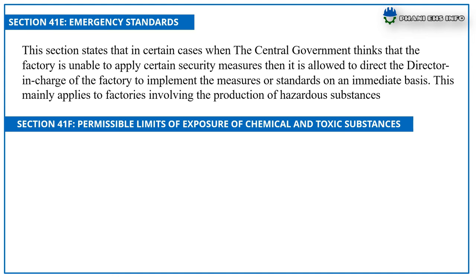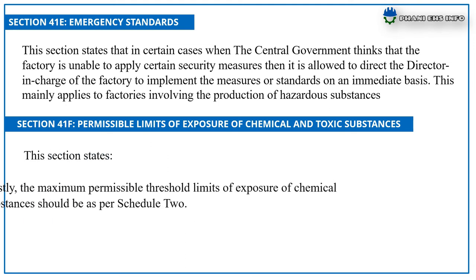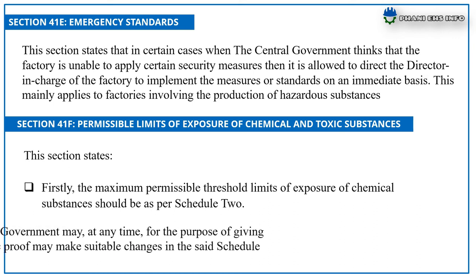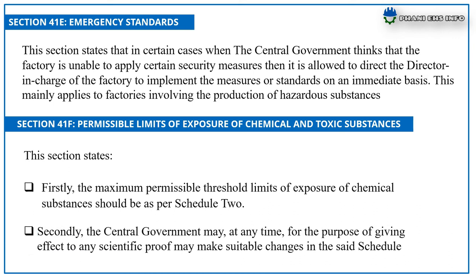Section 41F: Permissible Limit of Exposure of Chemicals and Toxic Substances. This section states that, firstly, the maximum permissible threshold limit of exposure of chemical substances should be as per Schedule 2. Secondly, the central government may at any time, for the purpose of giving effect to any scientific proof, make suitable changes in the said schedule.